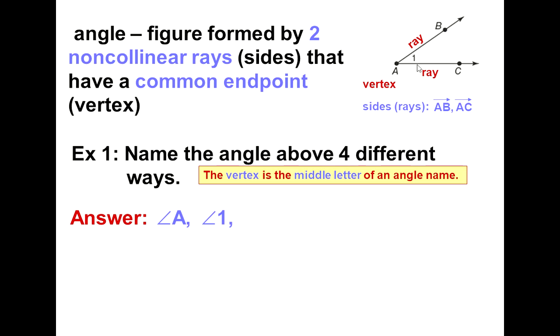If we use three letters, we could go in either direction as long as the vertex is in the middle. One way would be angle BAC, where point A, the vertex, is in the middle, and we could go in the opposite direction, angle CAB, where again the vertex is in the middle.